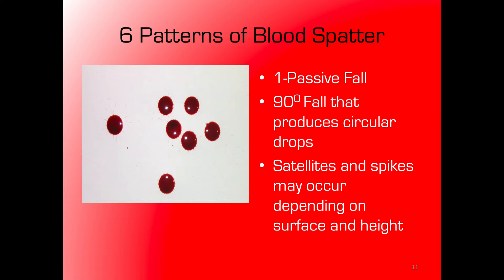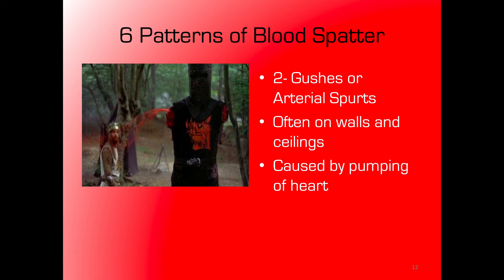First up are passive falls. From the picture, most people would say they look basically circular, and that's true — circular is an indicative trait of a passive fall. The reason they're circles is because they've fallen and impacted a surface at about a 90-degree angle. The further you get from that 90-degree angle, the more elongated or oval the droplets will look. Passive falls often have satellites and spikes — remember, a satellite is a secondary drop ejected from the main drop, and a spike is a stretch that didn't quite break free.